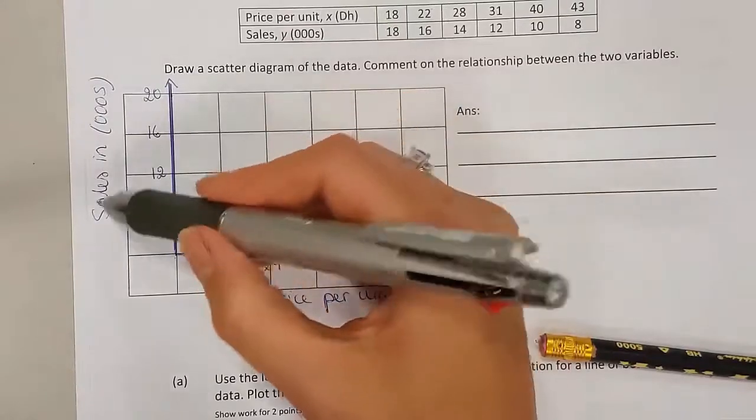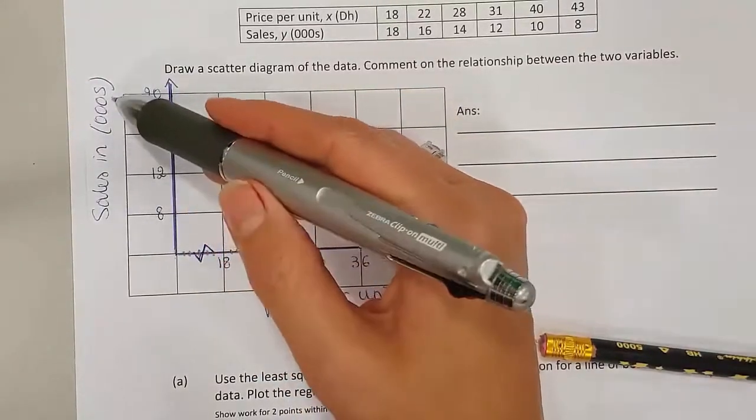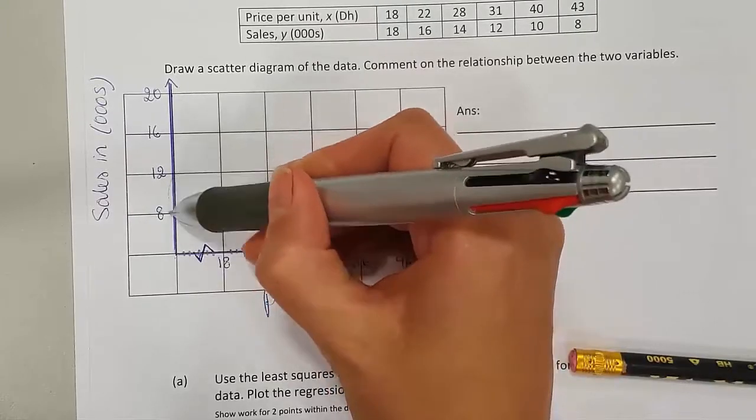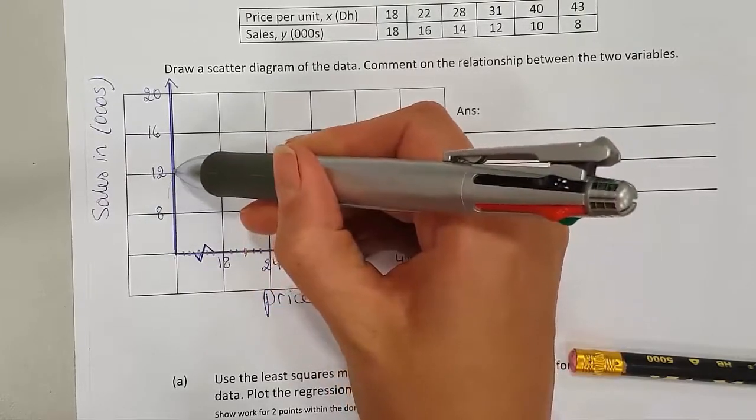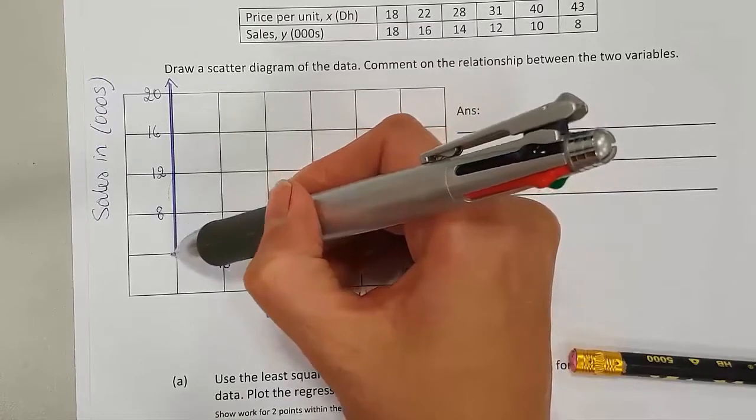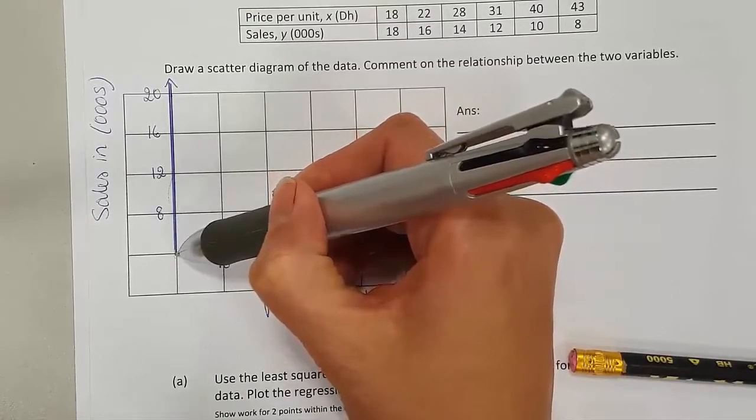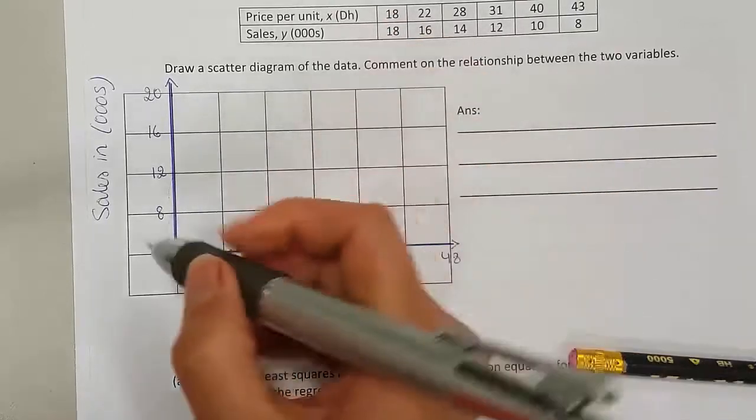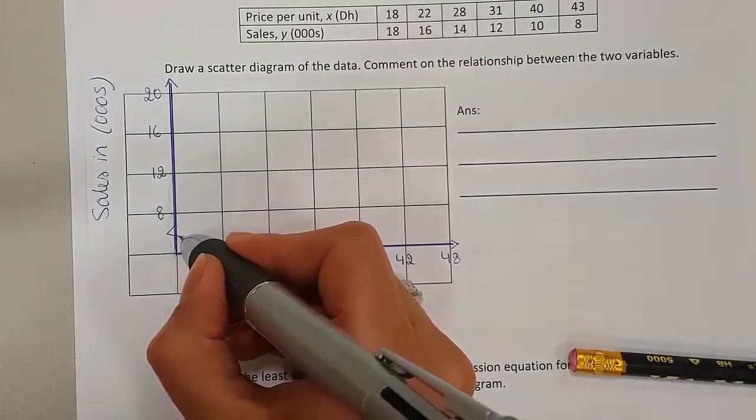Same thing on my y-axis, the sales in thousands. I worked with jumps of 4 each time. But when I go back here, this is not taking me back to 0. This is 8 in total. So I have to show that there's been a break.